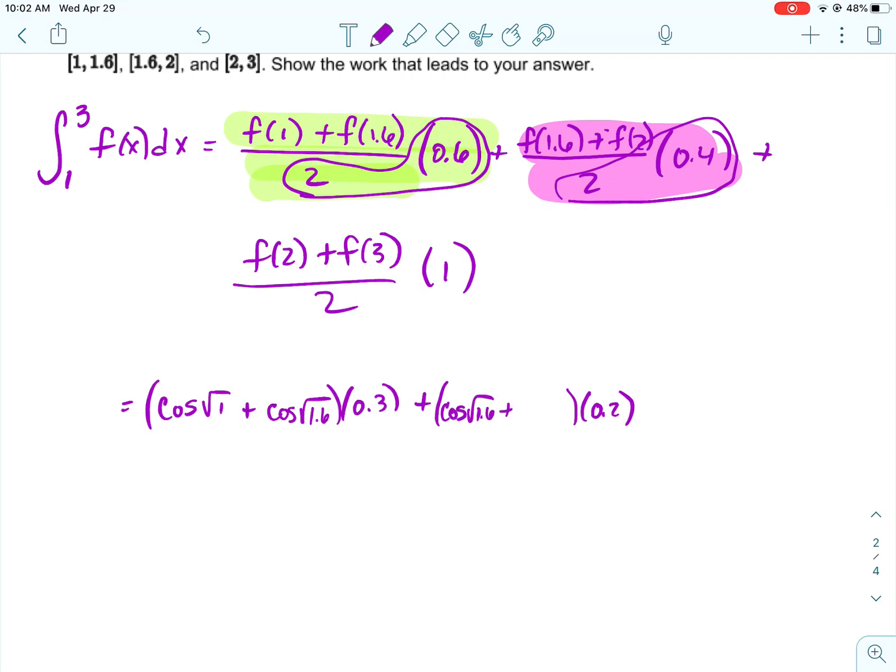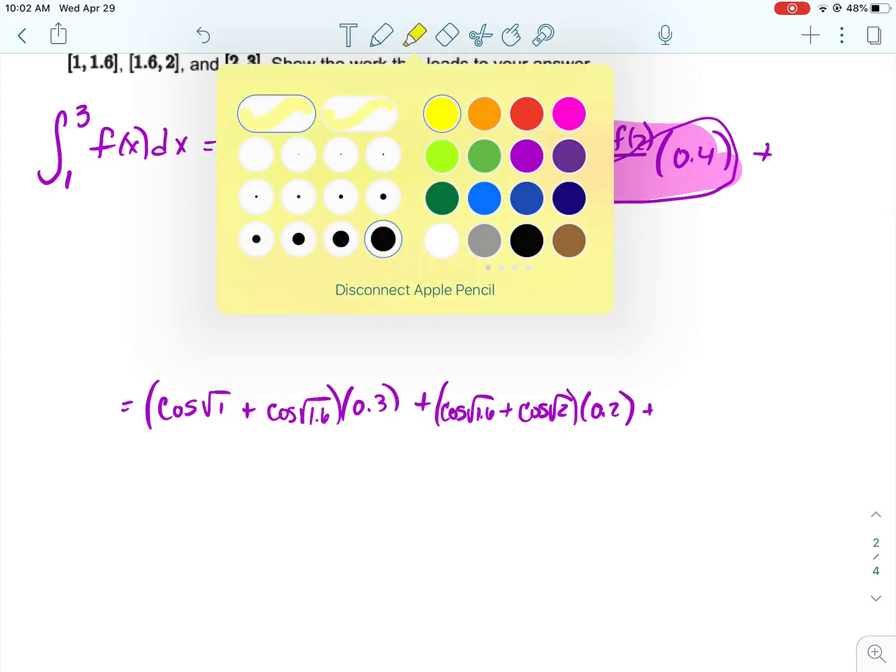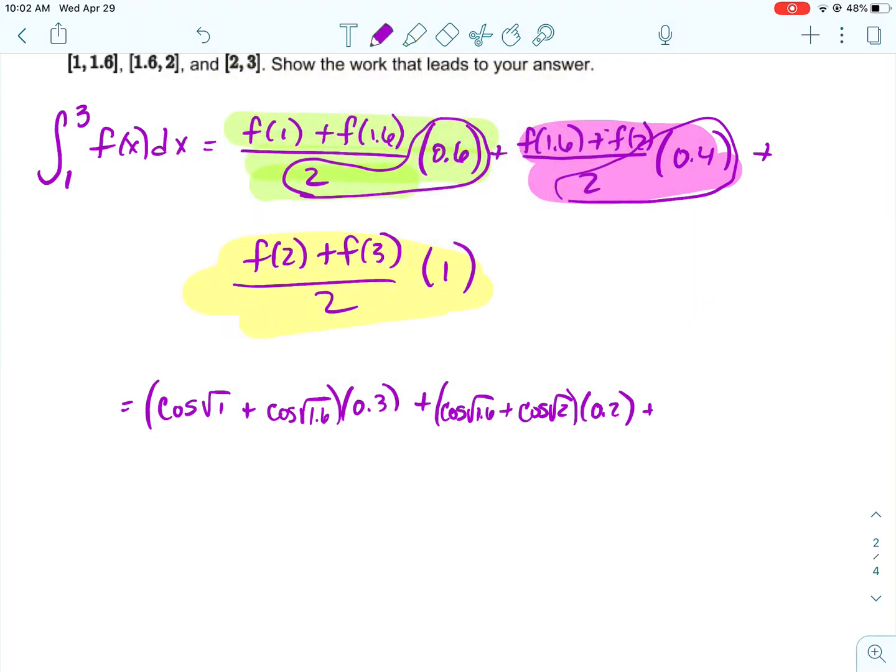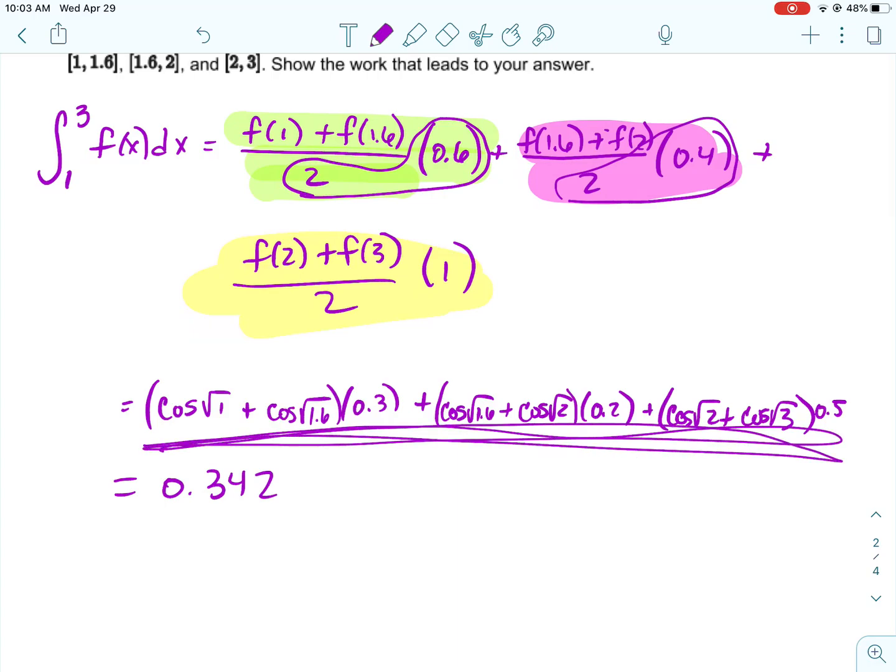And then we'll do the same thing for the second. Take this one. I'm going to go ahead and multiply 0.4 by 1.5. And then we have the cosine of the square root of 1.6 plus the cosine of the square root of 2. And then you can just type all that in the calculator.